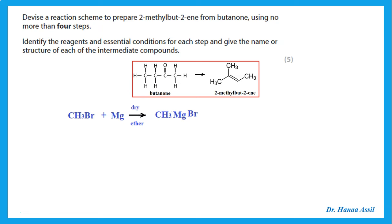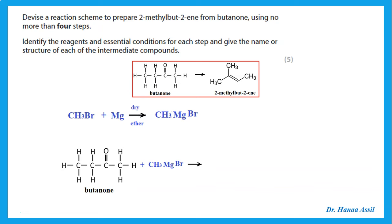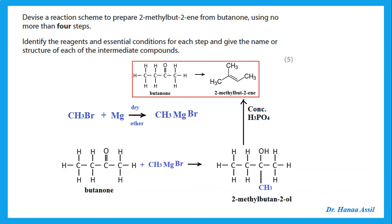Starting from butanone, I need to add an extra carbon. I prepare the Grignard reagent from methyl bromide and magnesium in dry ether, giving the Grignard. I then react this Grignard with butanone — this adds the extra carbon needed and converts the carbonyl into an OH group.